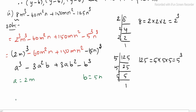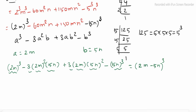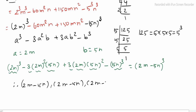Now let's rewrite the expression: 2m whole cube minus 3 times a squared times b plus 3 times a times b squared minus 5n whole cube — which is the expansion of a minus b whole cube. Therefore the three factors are: 2m minus 5n, 2m minus 5n, 2m minus 5n. Thank you.